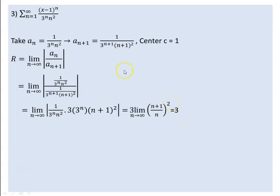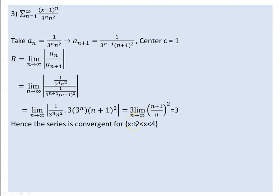So the limit as n goes to infinity is 1, and 1 times 3 gives R equals 3. The center is c equals 1. So the interval is centered at 1 with radius 3, giving the open interval from 1 minus 3 to 1 plus 3, which is (2, 4). The series is convergent for any value between 2 and 4.